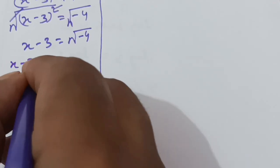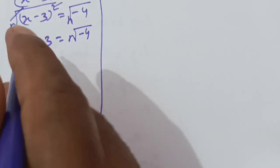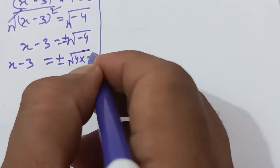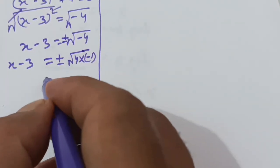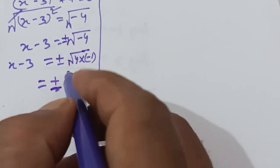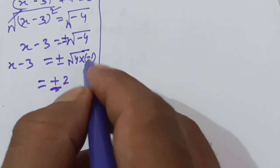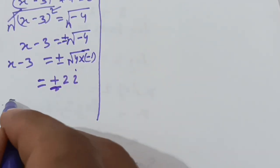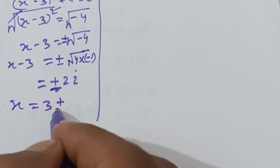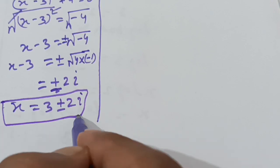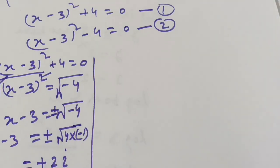The square root of negative 4 can be written as plus or minus the square root of 4 times negative 1, which equals plus or minus 2i, since the square root of negative 1 is i. So x equals 3 plus or minus 2i for this solution.